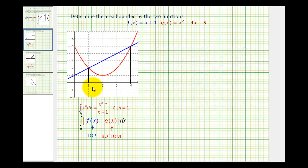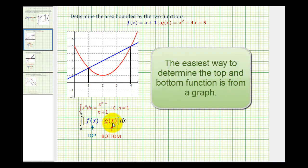So we'll set up a definite integral on the interval from 1 to 4. And then the integrand will be the top function minus the bottom function.